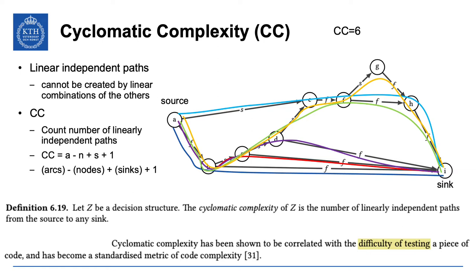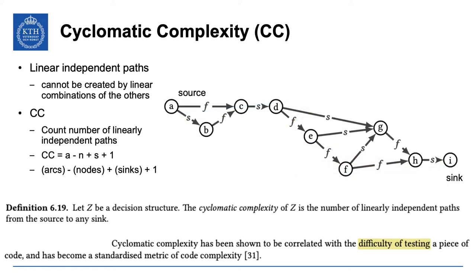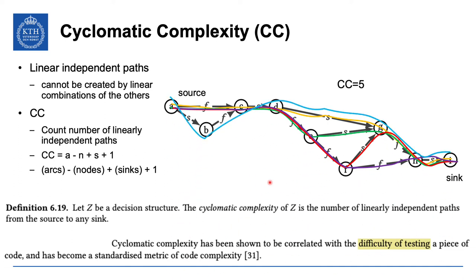In another example with the same definition, we identify one yellow path, the green path, the red path, and the purple path — for a total of five linearly independent paths. The cyclomatic complexity is five, because there is no additional path that cannot be created as a linear combination of these five. You can verify this by counting edges, sinks, and nodes and applying the formula to get five.